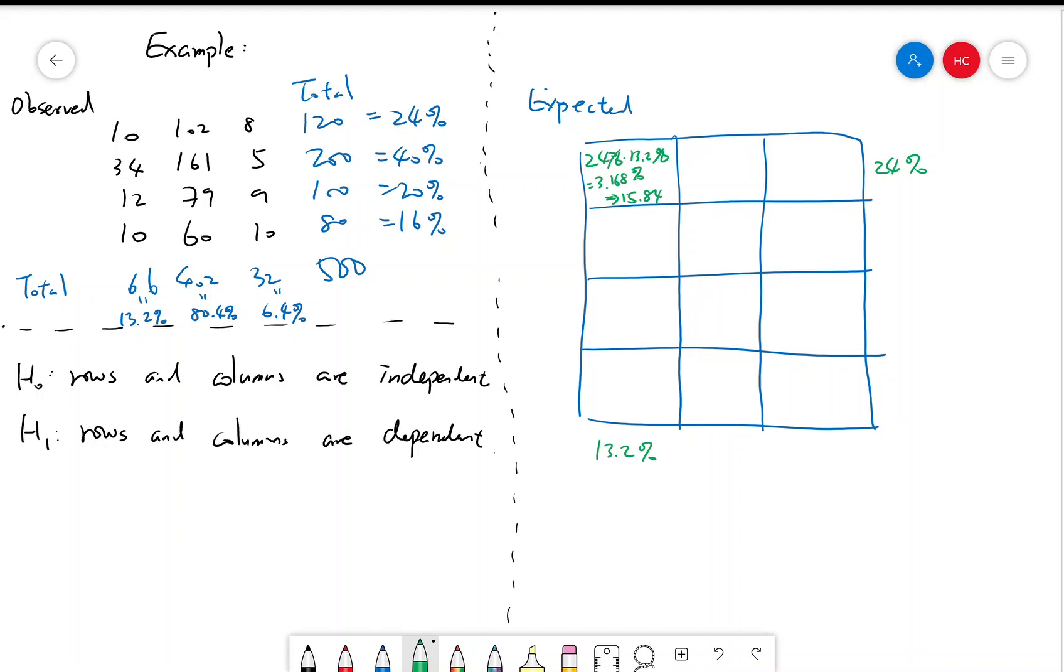So for this one, third column and third row, third row is 20%, third column is 6.4%. So the expected value is 20% times 6.4%, which is 1.28%. If you multiply by 500, it's 6.4 is the count.